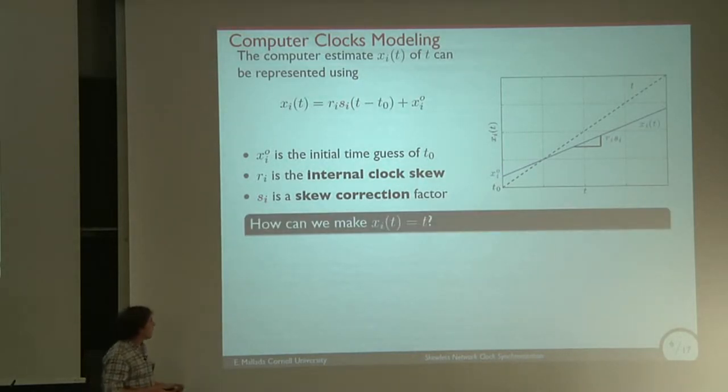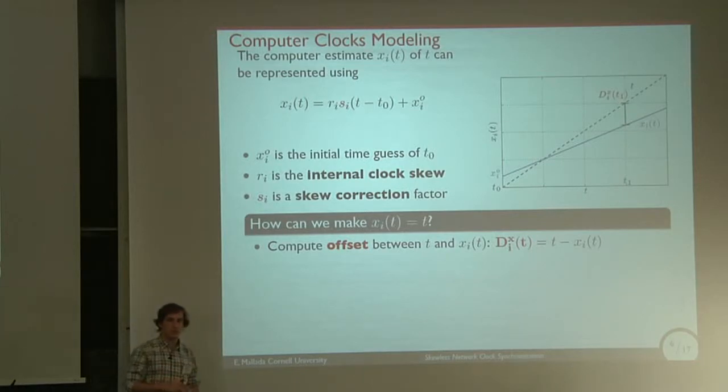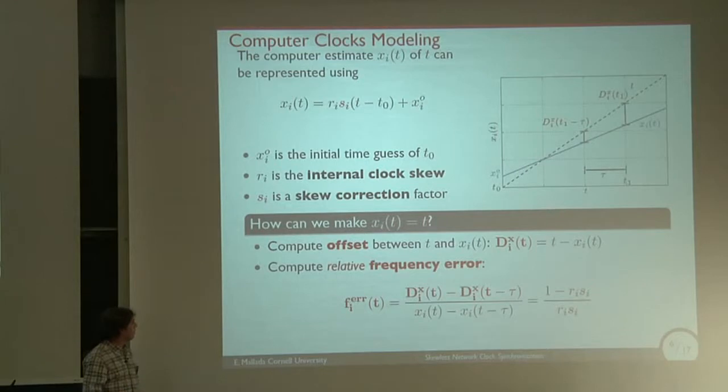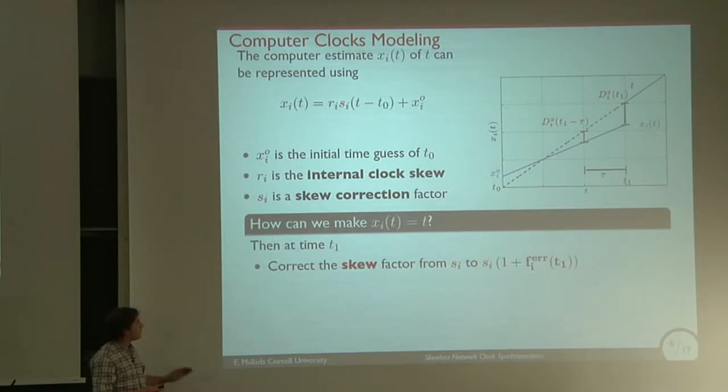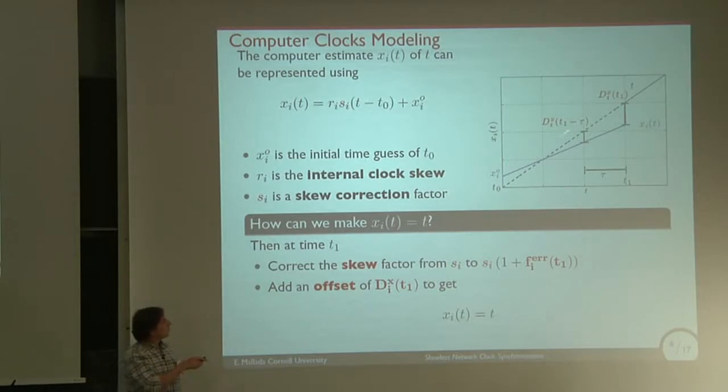The question is how can we make this estimation xᵢ equal to T? You can measure the offset. If you have another node that has access to this global reference of time, then you measure the offset between your local time and these node times. You can also try to compute the relative frequency error by taking two different measurements of offset at different times. When you have these two informations, you can compensate the skew, the frequency error, and also add an additional offset so that you end up running with the same speed as the global reference time and exactly with the same value.